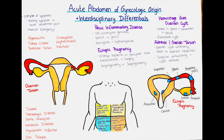Acute abdomen is often an interdisciplinary task to solve, as for example appendicitis, Crohn's disease, cholecystitis, nephrolithiasis, intestinal torsion, infections, trauma, hematological diseases, aortic aneurysm, metabolic diseases, myocardial infarction, disc prolapse, or in our case gynecological diseases can be the cause of the acute abdomen.